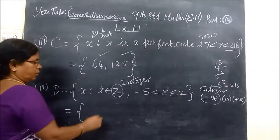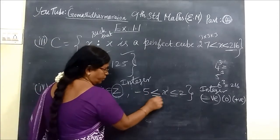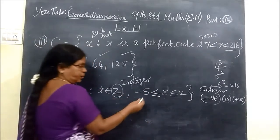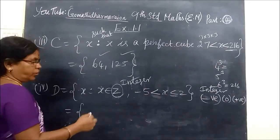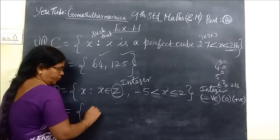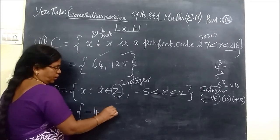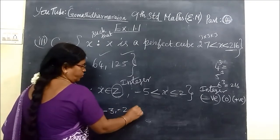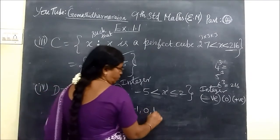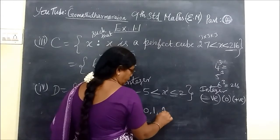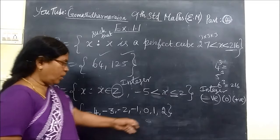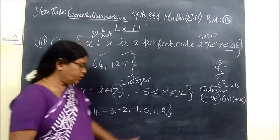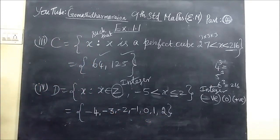So now you write less than or equal to. If it is equal to, you consider minus 5 also. Since no equal to sign, you start from minus 4, then minus 3, minus 2, minus 1, zero, 1, then 2. See here it is given equal, so after 2 we are writing this one.